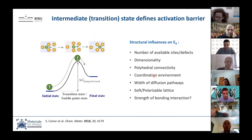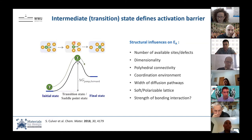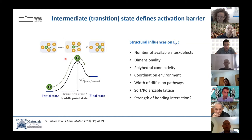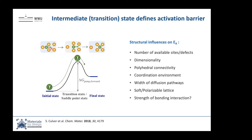Let's look at what ionic conduction actually is. It's in principle a simple process: a lithium ion sitting on a specific lattice site wants to jump to an adjacent site. By doing that it needs to displace the lattice a little bit, which costs energy — that's our delta G of a jump, what we call the activation barrier. There are many structural influences on this barrier: you need a high number of available sites, high dimensionality, ideal polyhedral connectivity — for instance, face-sharing configurations are easier than edge or corner sharing — and the change of coordination environment also matters.